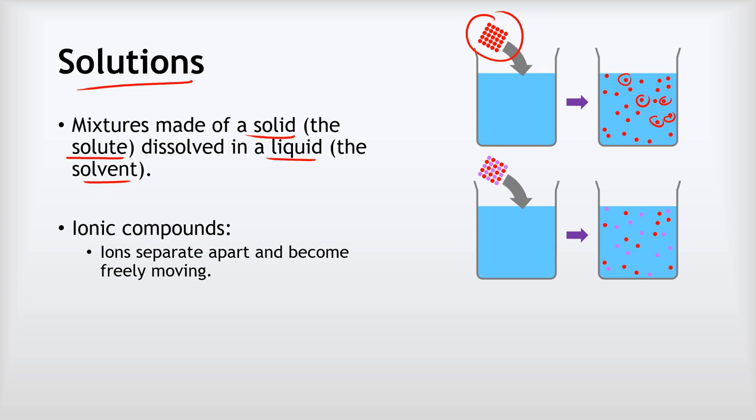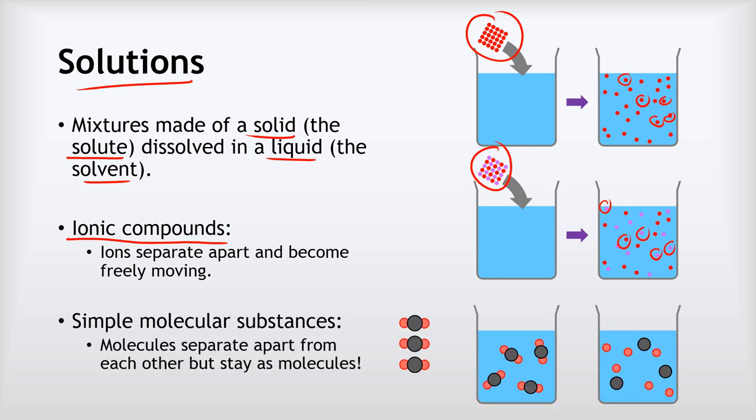Different types of substances dissolve in different ways. Ionic compounds, for example, when they dissolve, all of the individual red and pink ions with their opposite charges separate out into individual red and pink ions in the solution and everything is completely broken apart.